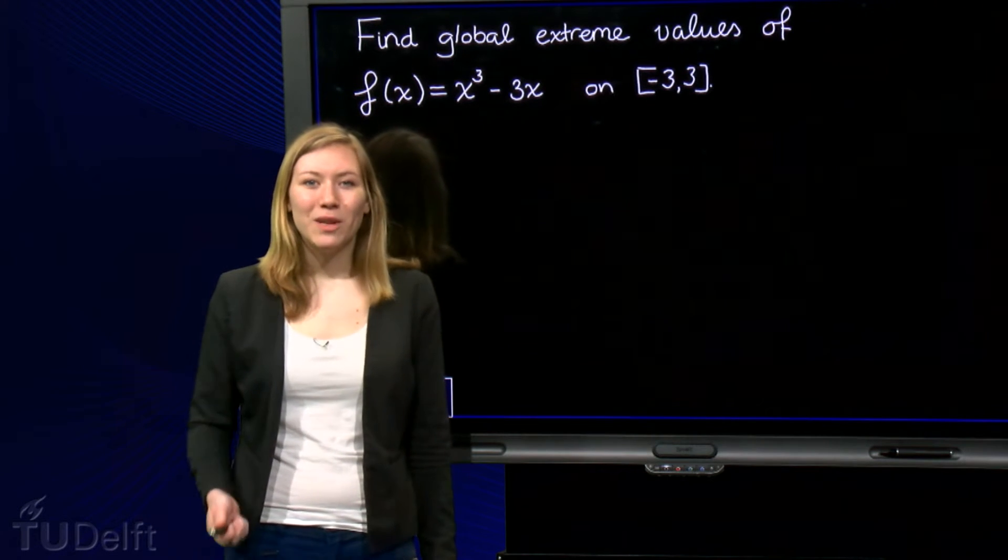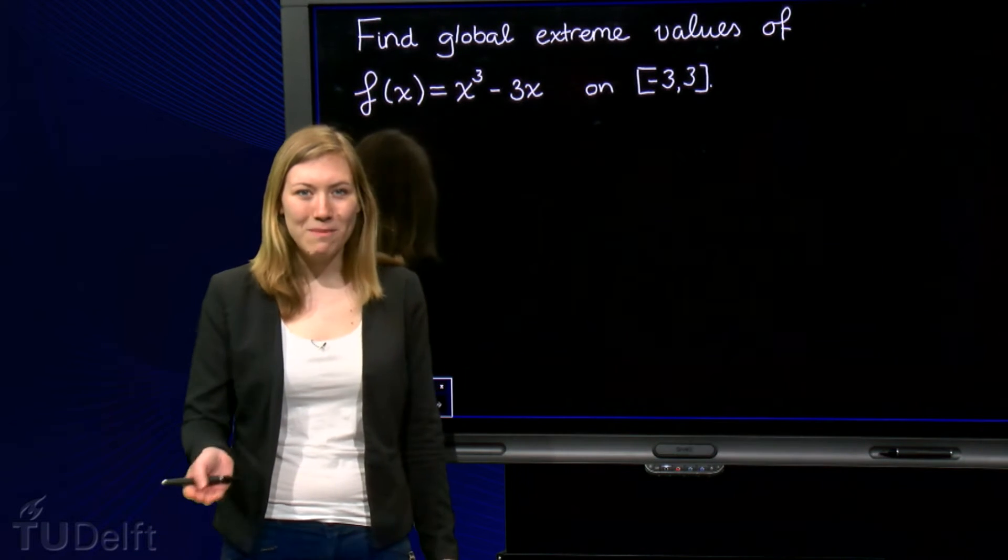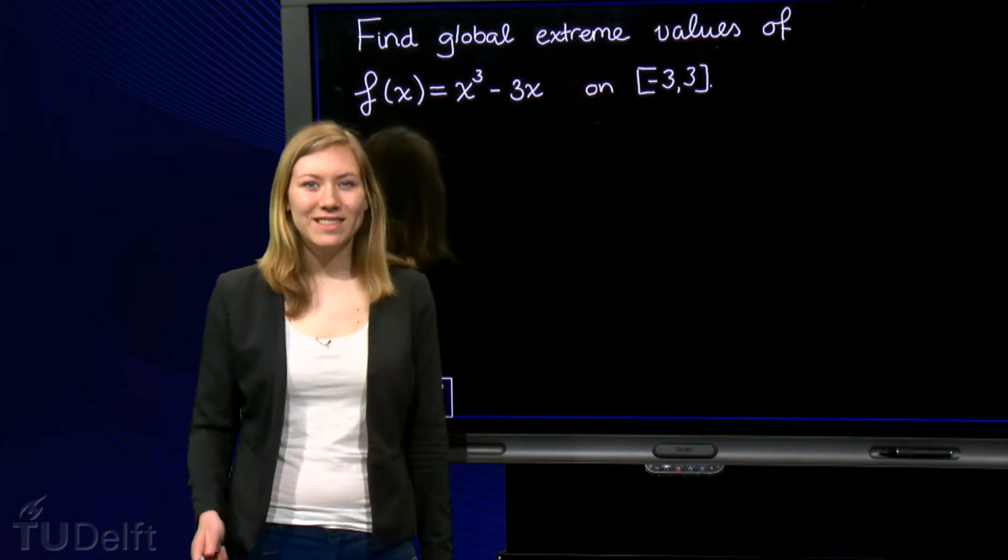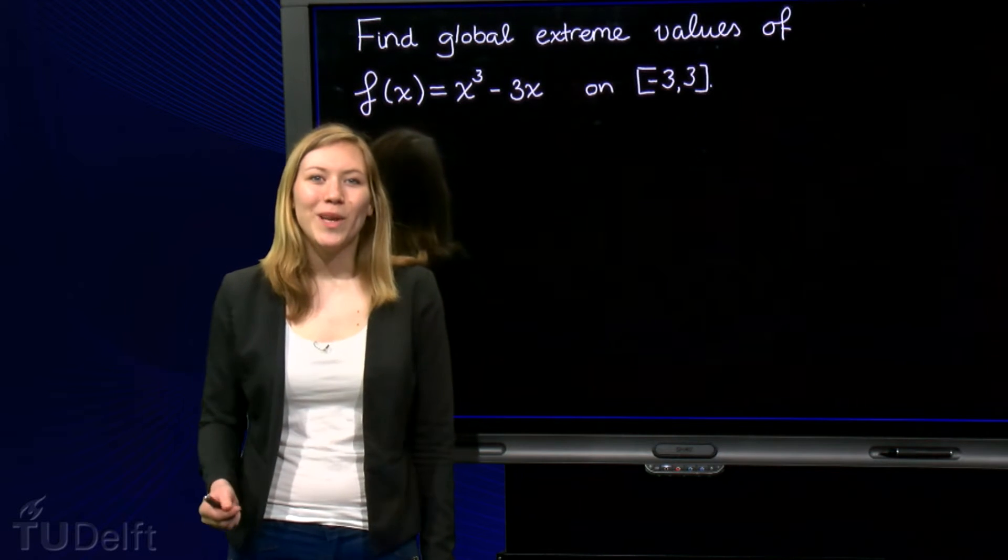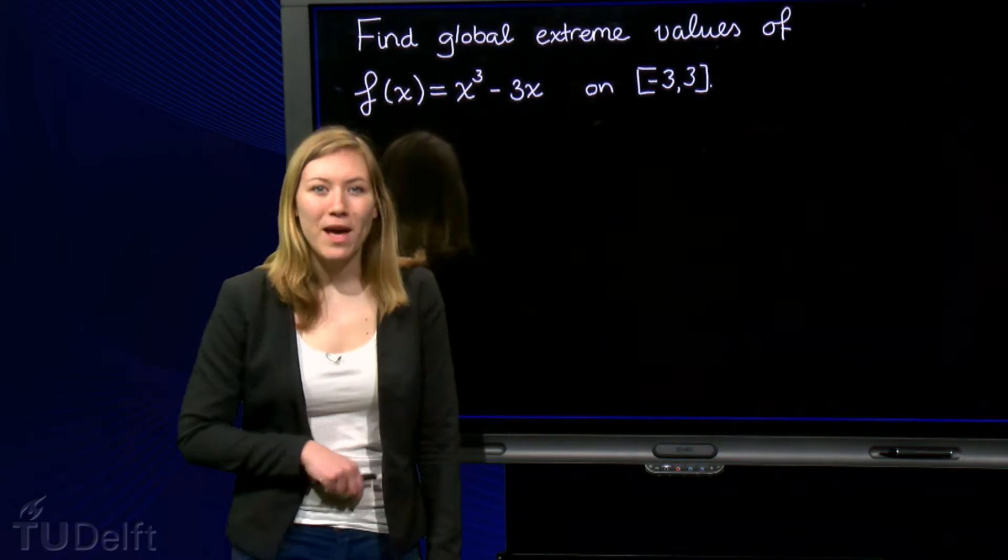When we have done this, we can find out if we have found a minimum or a maximum value of f at a point a by making a number line of the derivative of f. The last step is to find out the function value of these points, so we get our extreme values of f.